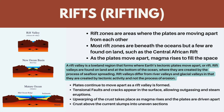Rift zones are areas where plates are moving apart from each other. Most rift zones are beneath the ocean, but a few are found on land, such as the Central African Rift. As the plates move apart, magma rises to fill the space. A rift valley is a lowland region that forms where Earth's tectonic plates move apart. Plates continue to move apart as a rift valley is formed — tensional faults and cracks appear in the surface, allowing outgassing and steam eruptions. Upwelling of the crust takes place as magma rises and plates are driven apart, and the crust above slumps into uneven sections.